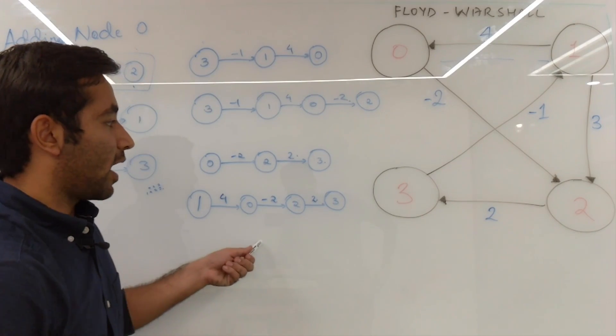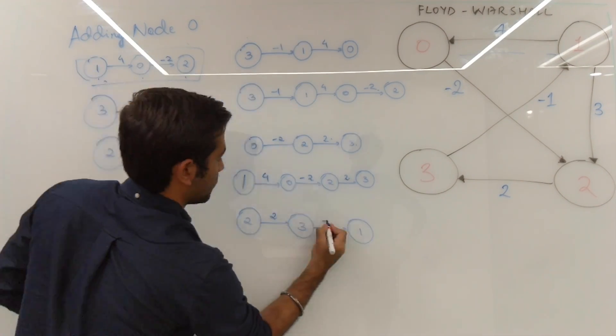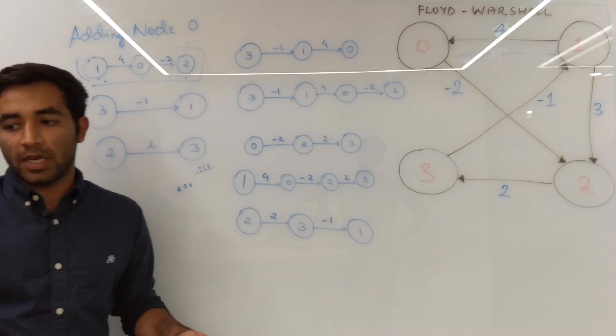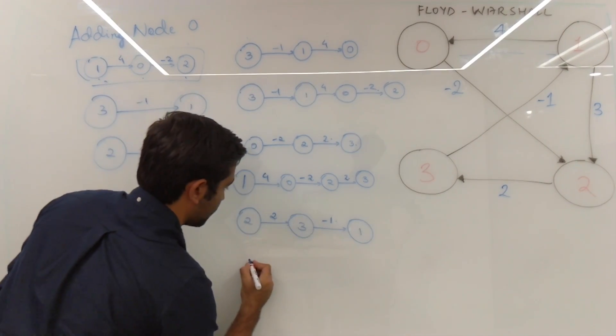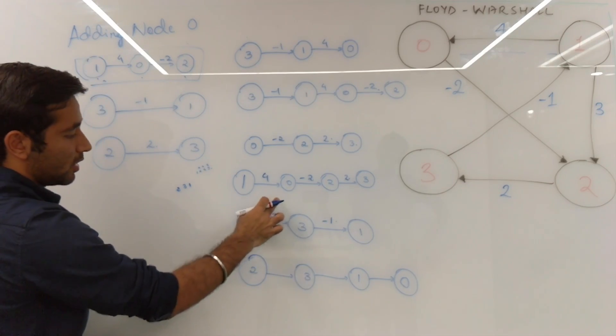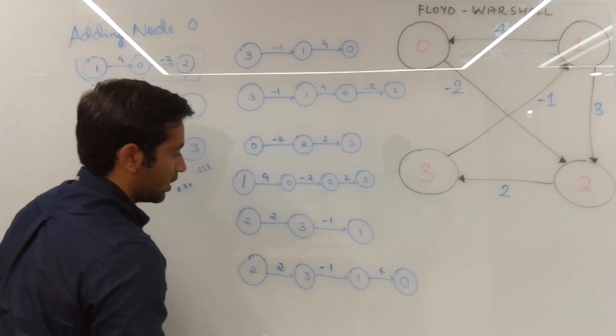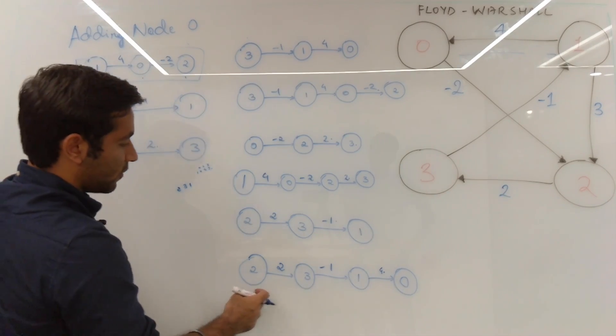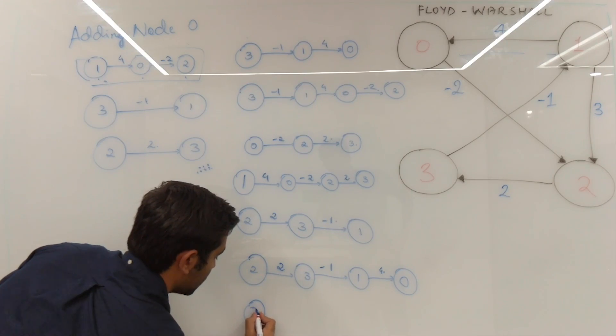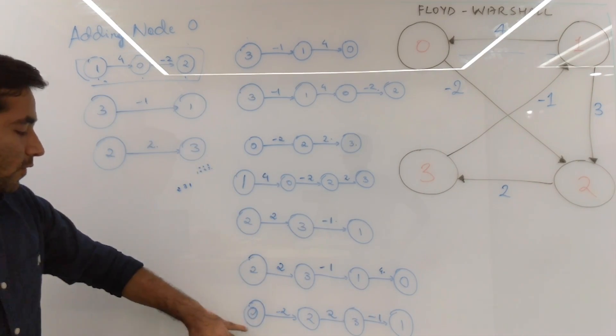Now we will move on to the last step which is addition of node three. This is one of the paths which we have from two to three to one. And similarly, taking the previous paths we have as zero is connected to one in this particular way and this is the smallest path from which you can reach from one to zero. Zero is connected to two which has a negative weight so we can improve the answer. From this we finally conclude this.